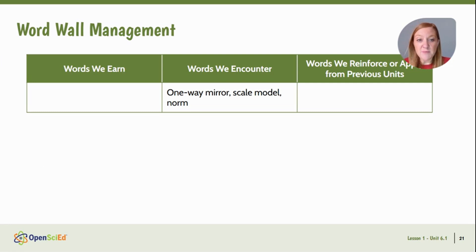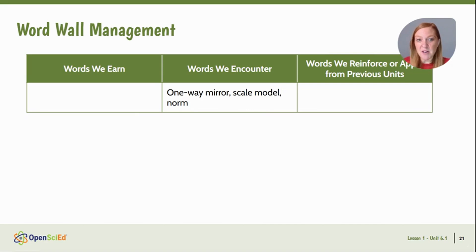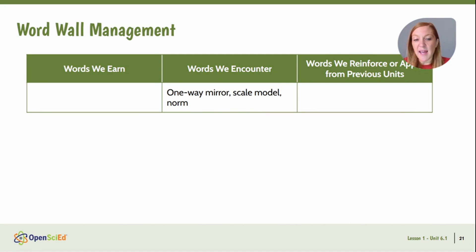Word wall-wise, we're not adding anything to a word wall yet, but we are encountering words like one-way mirror — your students may call it a mirror window or something like that, which is totally fine at this point. We'll also introduce the concept of a scale model and the word norms.